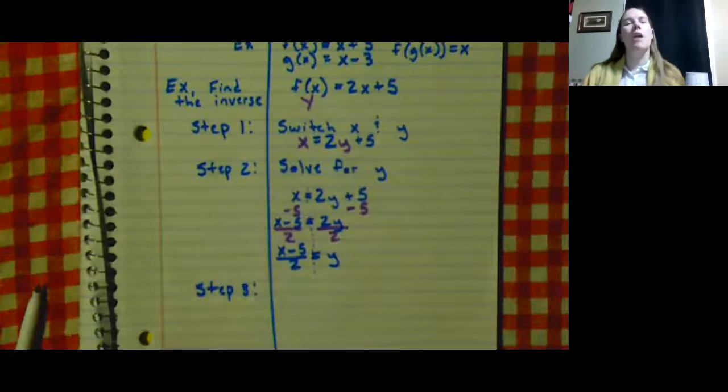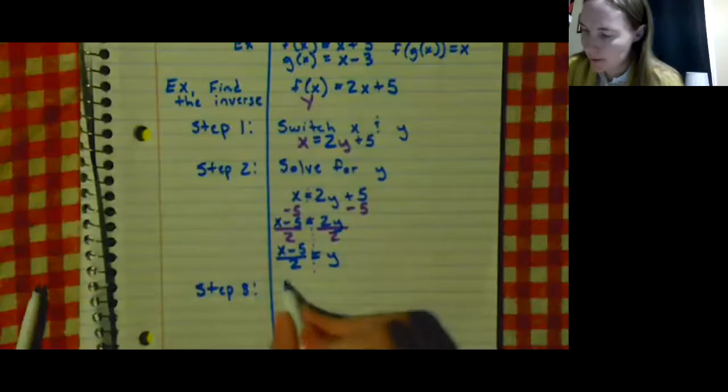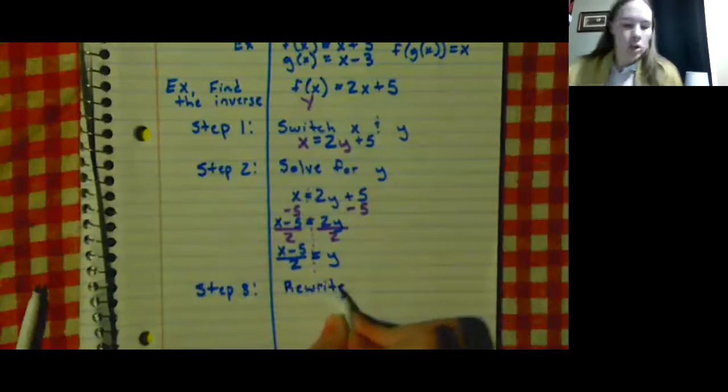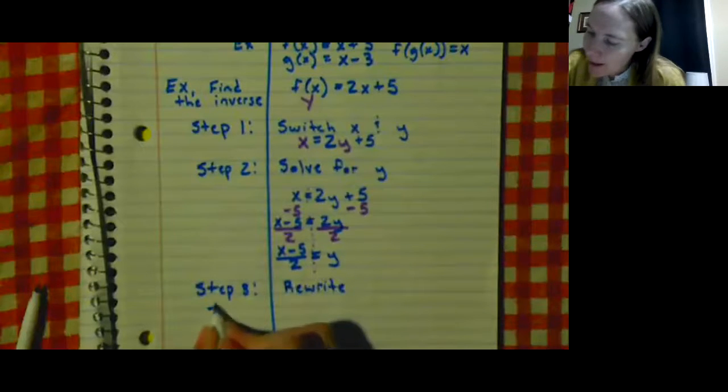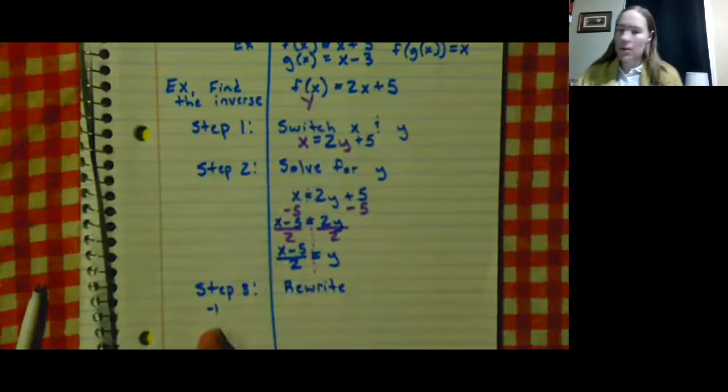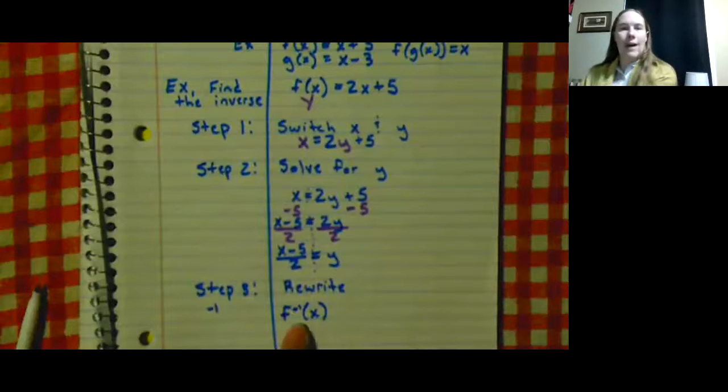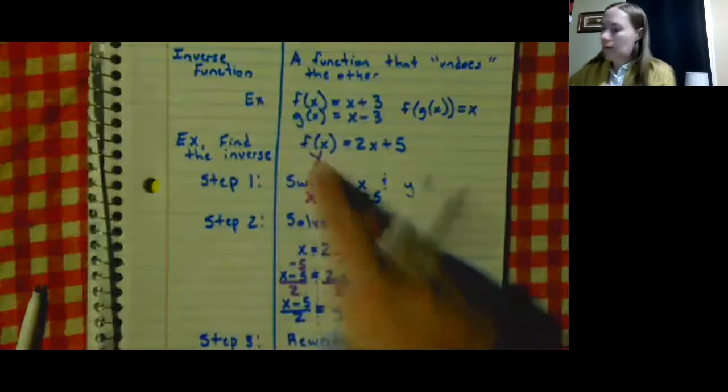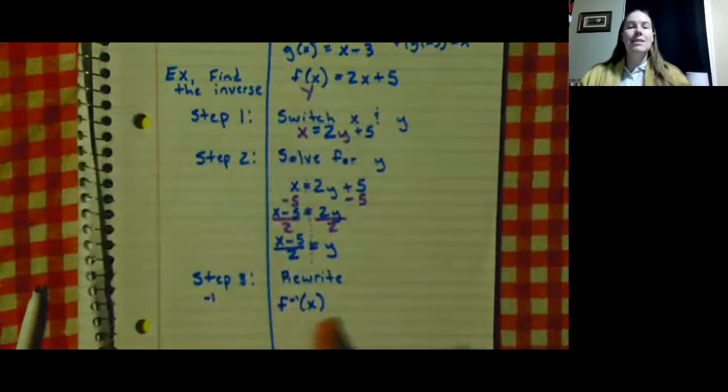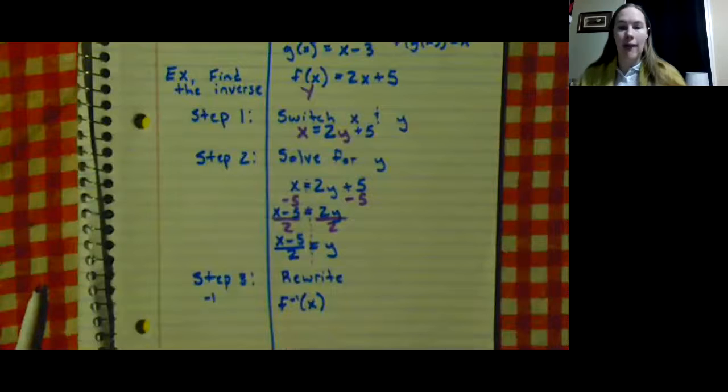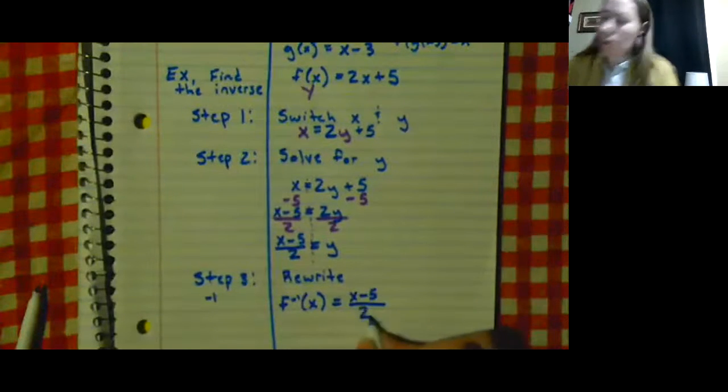This step is mostly going to be done for you because it's really hard to write in the computer world, but it's to rewrite. So the way you say you found an inverse function is by adding a little negative 1 to your function. So I have f^(-1)(x). So I started with f(x), I add this exponent-looking negative 1, and this means inverse. This means that this is the inverse of f, and then we found it up here: it's our (x - 5) / 2.